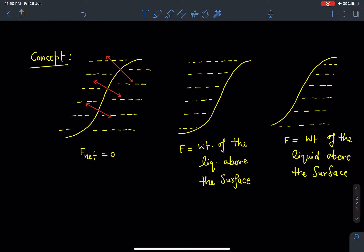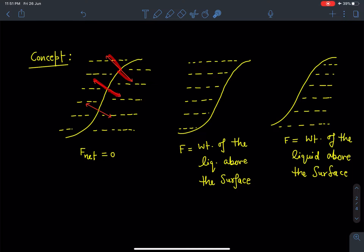When any thin surface is present inside the liquid and liquid is present on both sides, the liquid above and below the surface apply equal forces. The pressure varies, but the pressure below the surface also varies in a similar fashion. Overall, these forces due to liquid above and below the surface cancel each other out. Assuming negligible thickness of the surface, the net force by the liquid on the surface is zero when liquid is present on both sides.